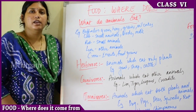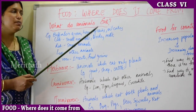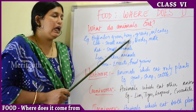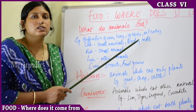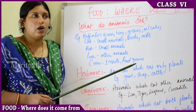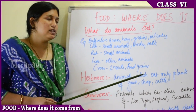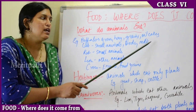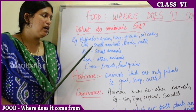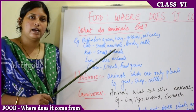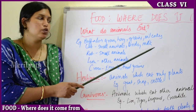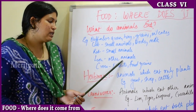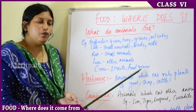Animals are sources of food, and now we will learn what animals eat. A buffalo eats grass, hay (dry grass), food grains, and oil cakes. Oil cake is the remaining waste part after oil is extracted from seeds like mustard or soya bean — it is very nutritious for animals. A cat eats small animals like rats, birds, and drinks milk. Lions eat other animals. Crows eat insects and food grains.